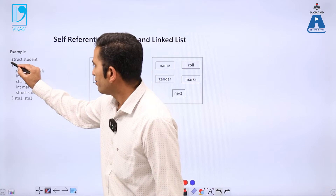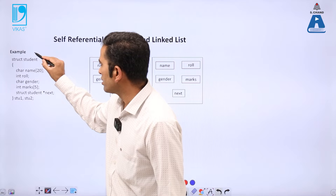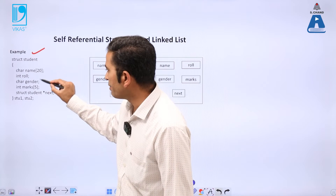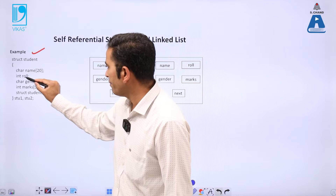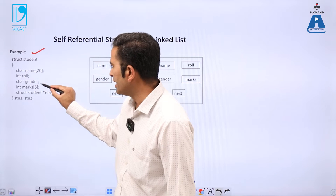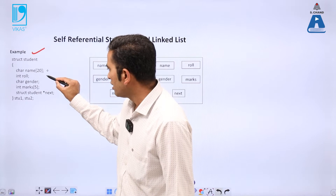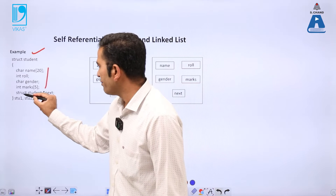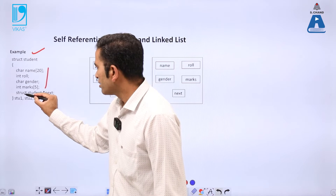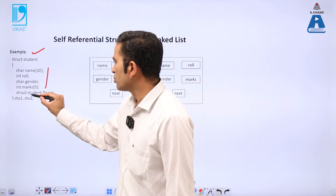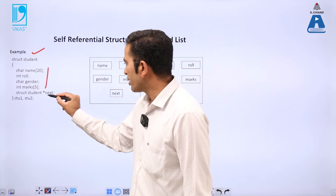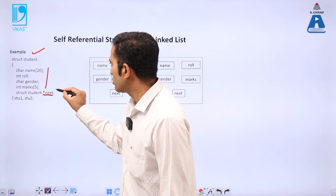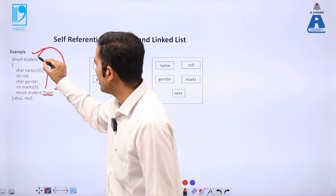Now understand this concept with a simplified example. We have developed a structure of student type: struct student. Inside this we have five members — name, roll number, gender, and marks. And then we have the self-referential part: struct student star next. This next is a pointer type, so it will again point to itself.